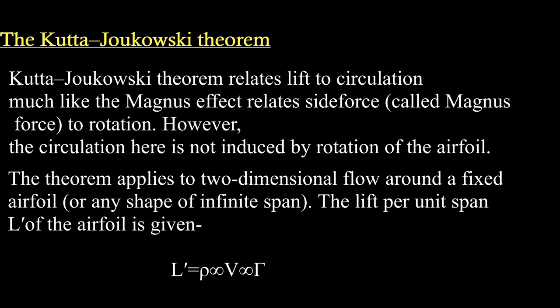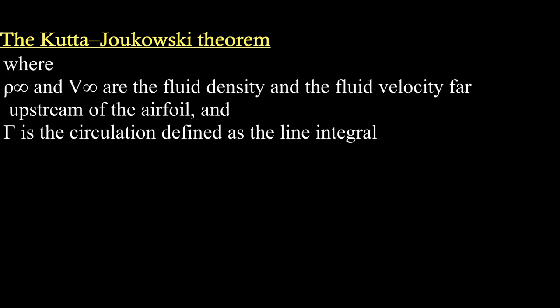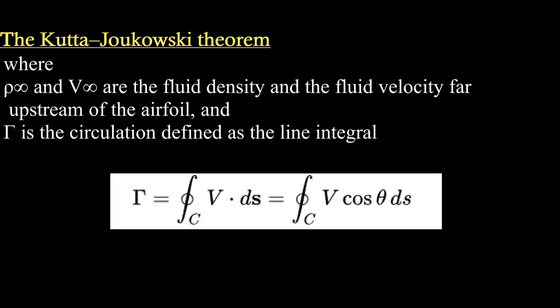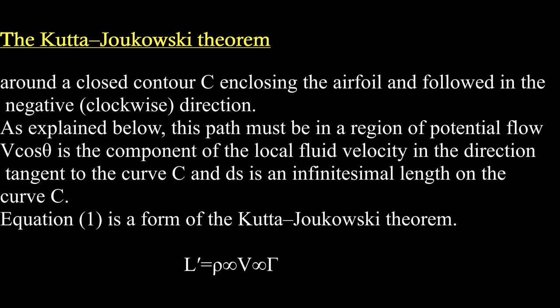The lift per unit span L of the airfoil is given by L = ρVΓ, where ρ and V are the fluid density and the fluid velocity far upstream of the airfoil, and Γ is the circulation defined as the line integral around a closed contour C enclosing the airfoil and followed in the negative clockwise direction.